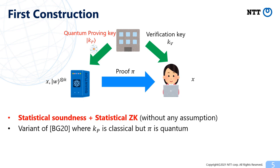The first construction is in the quantum secret parameter model. In this model, the trusted party first sends the quantum proving key and classical verification key to the prover and verifier respectively. After this setup, the prover can non-interactively generate a classical proof. We prove that our construction satisfies both statistical soundness and statistical zero-knowledge without assuming any computational assumption. Note that this is a variant of the NIZK by Broadbent and Grilo where the proving key is classical, but the proof is quantum.